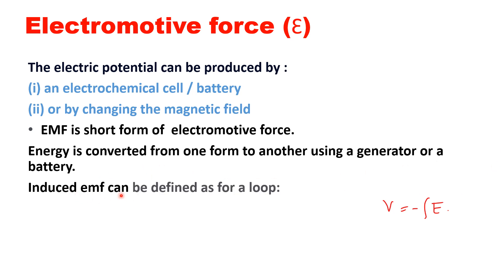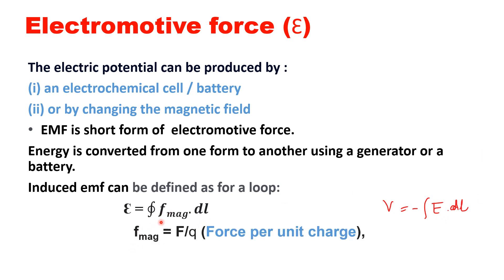The induced EMF can be defined for a loop according to this integral: E equals the line integral of f_magnetic dot dl. This is similar to how the potential was the line integral of E dot dl. Here the source is the magnetic force per unit charge, denoted by small f_magnetic, which equals the Lorentz force divided by q. And dl is the line element.